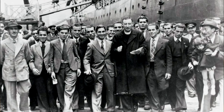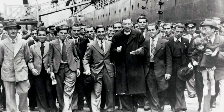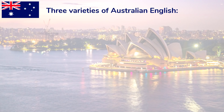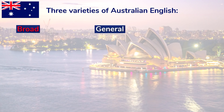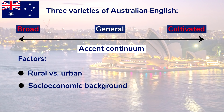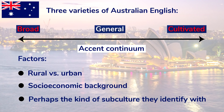It has also been influenced by additional waves of immigration since the days of the penal colony ended. There are basically three varieties of Australian English: broad, general, and cultivated Australian English. They essentially form an accent continuum, with the speaker's accent depending mostly on whether they grew up in a rural or urban area, their socioeconomic background, and perhaps the kind of subculture they identify with.